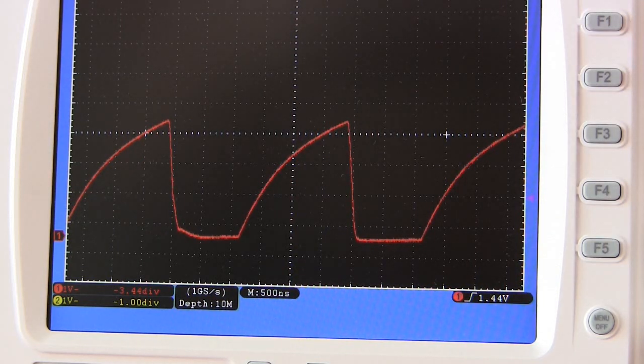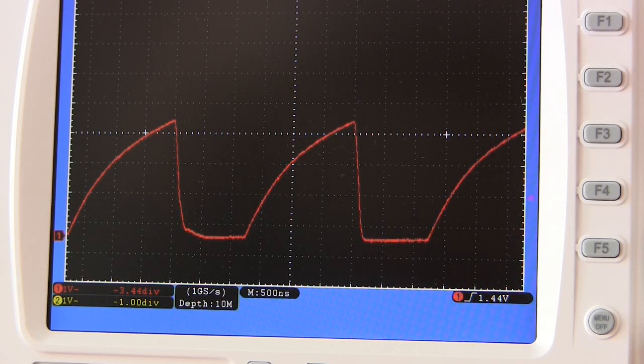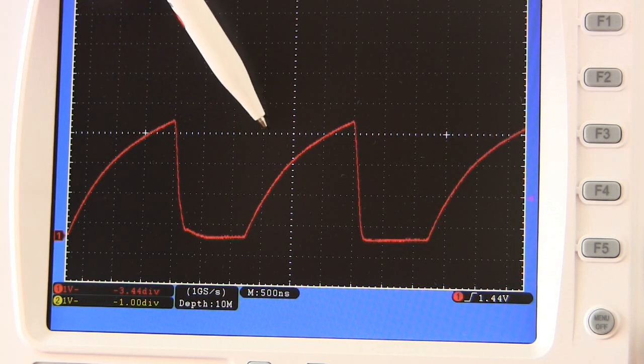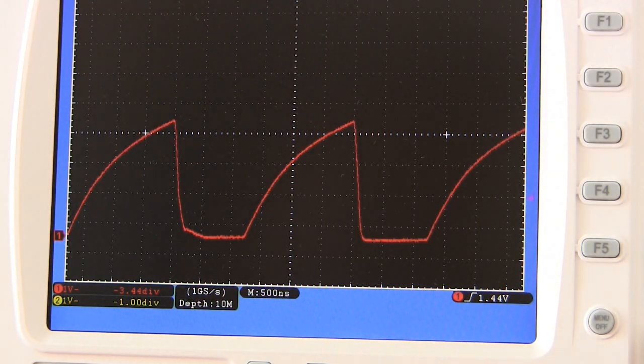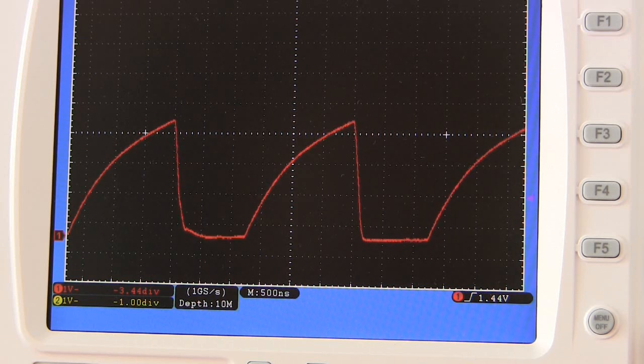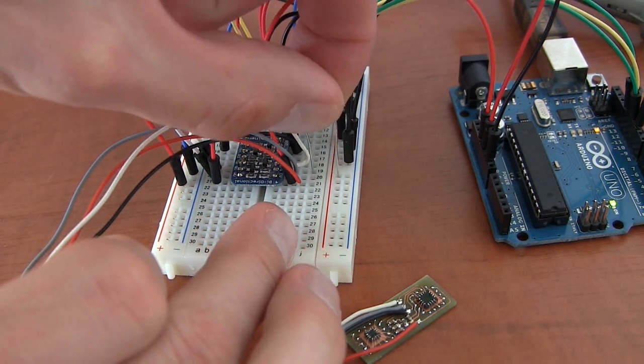Now I noticed something strange while probing the I2C clock pulse. As you can see, the clock is only running at 333 kilohertz and not the selected 400 kilohertz. The device 10k pull-up resistors are in place, so what is going on here?